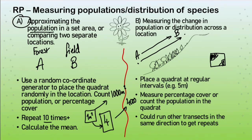If we want to know how many orangutans are in the whole of Borneo, we use random coordinates across Borneo, sample maybe 500 square metre areas, count orangutans in those locations, and scale up to the whole of Borneo. We don't individually count them — we estimate based on this technique.